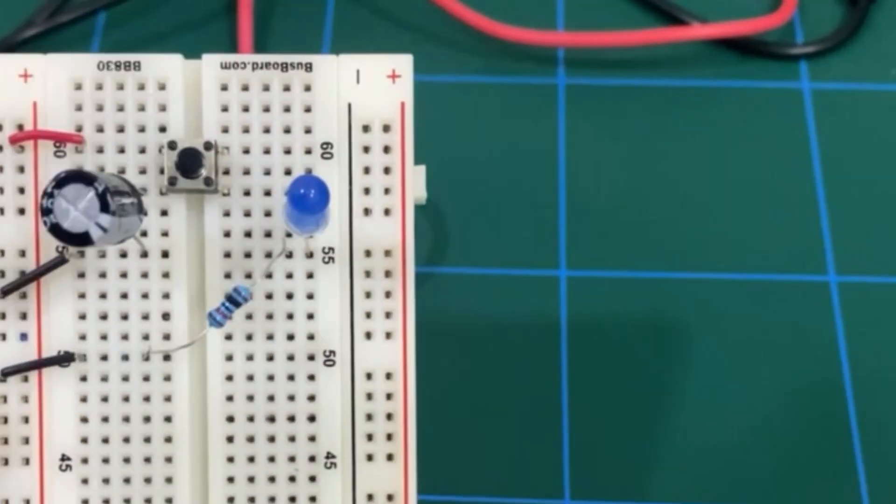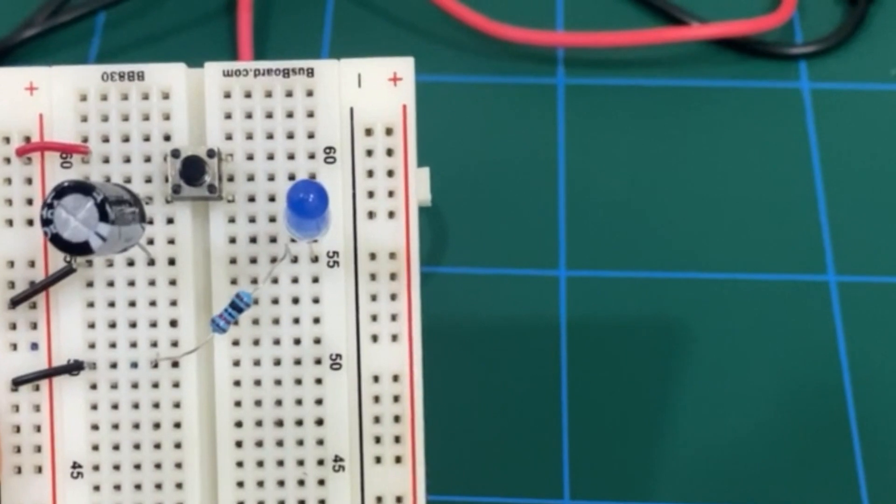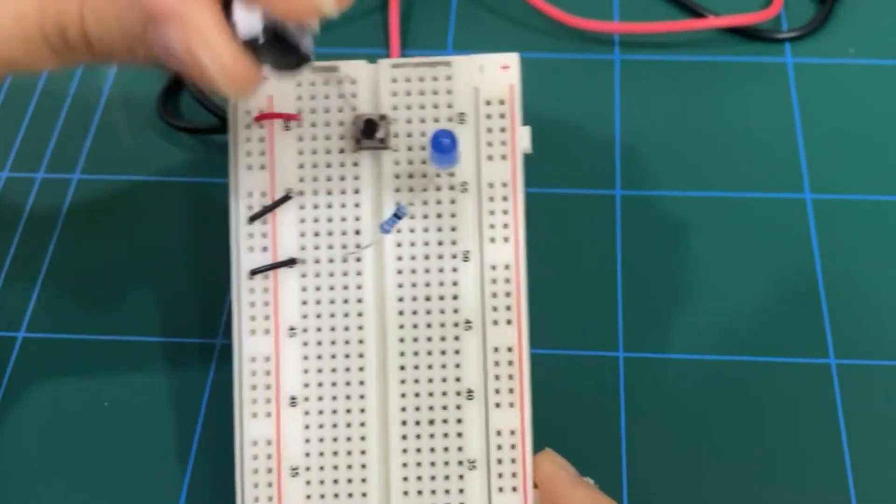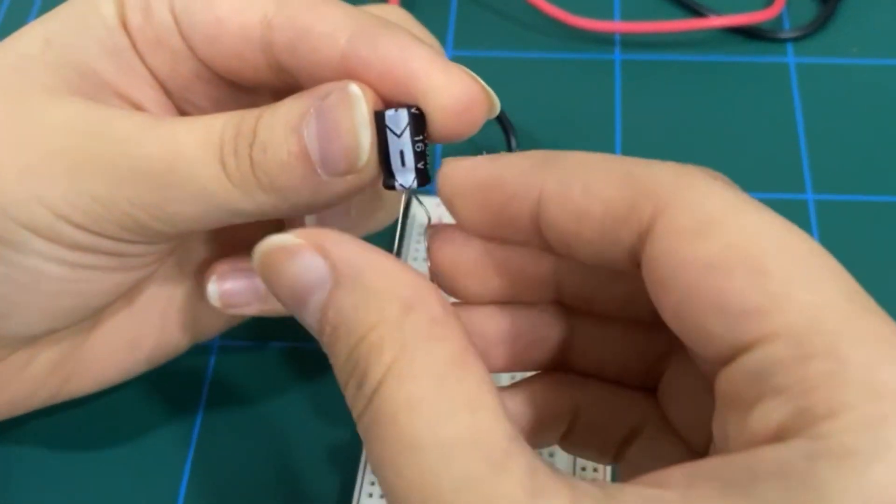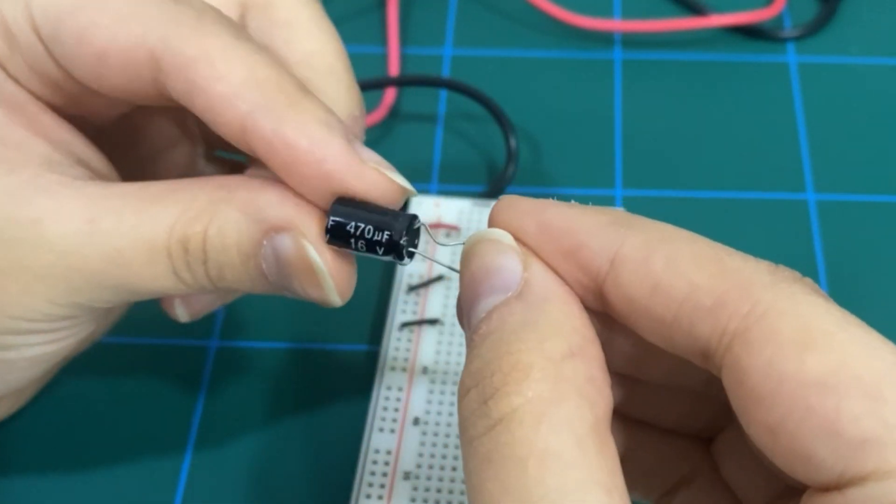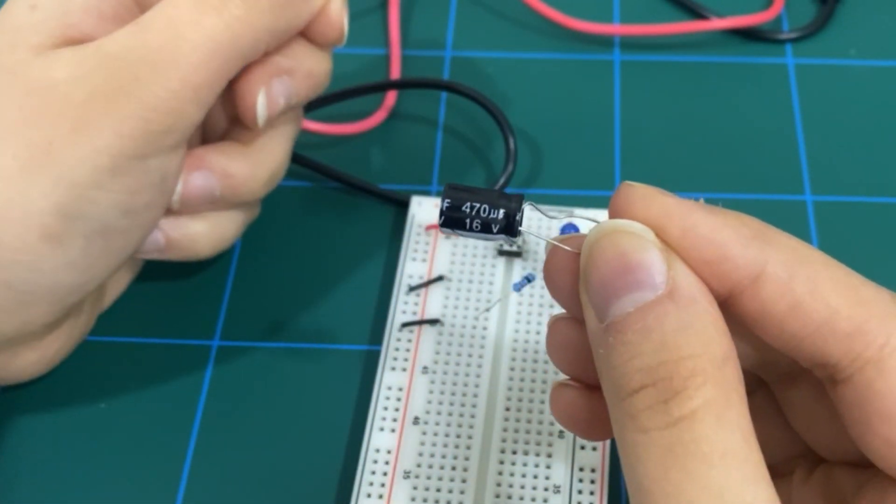Now, now that we've had a look at the circuit, let's just talk about the capacitor. So we have the 470 microfarads capacitor.